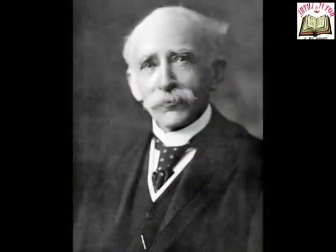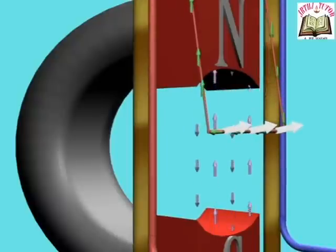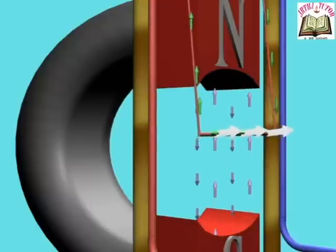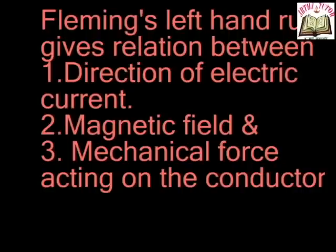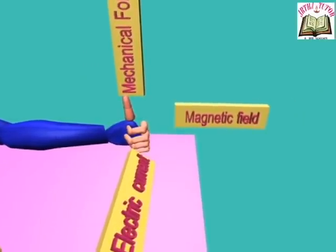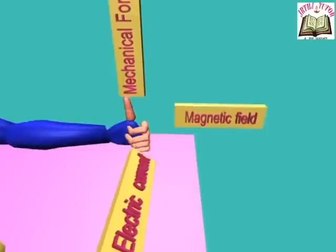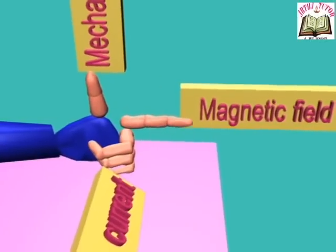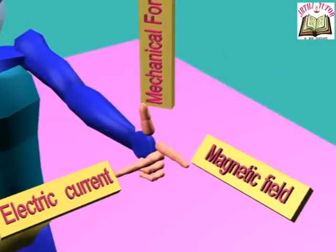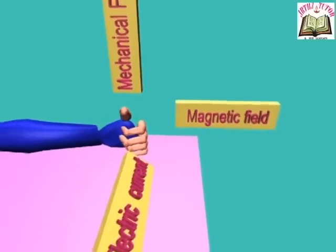John Ambrose Fleming, a British electrical engineer, postulated Fleming's left hand rule or motor rule. The principle of this motor rule is: a current carrying conductor placed in a magnetic field experiences a mechanical force. Thus, Fleming's left hand rule gives the relationship between the direction of electric current, magnetic field and the mechanical force acting on the conductor. Arrange the main finger, forefinger and the central finger of the left hand perpendicular to one another. If the forefinger indicates the magnetic field and the central finger indicates the direction of electric current, then the main finger indicates the direction of mechanical force acting on the conductor.